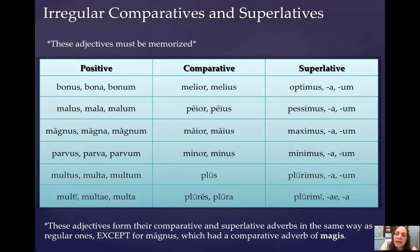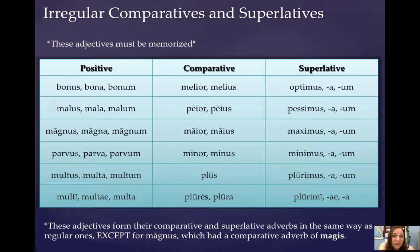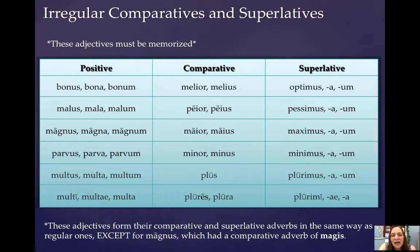The plural of multi, multa, meaning many in English, is plural — and the superlative is plurimi, plurimae, plurima. The comparative plural of plus functions as an adjective, while the singular is a neuter noun. One thing I want to say before we move on: these adjectives form their comparative adverbs exactly the way you would expect them to, with one exception, and that one exception is magnus. You would expect the comparative adverb to be maius, but it's irregular — it's magis — and you just need to learn that. So the comparative adverb for magnus, magna, magnum is magis.